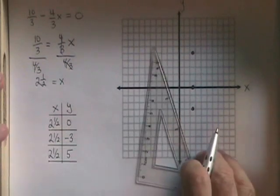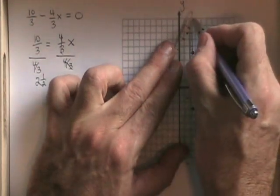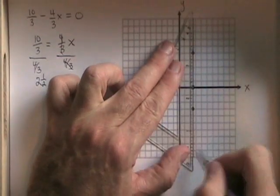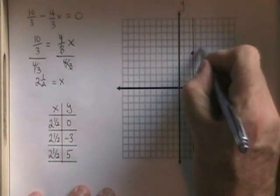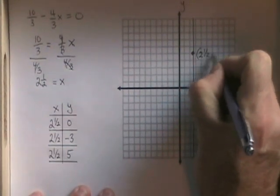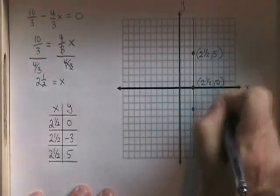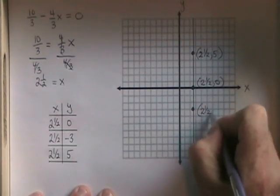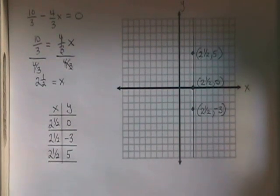All that's left is to draw a straight line through those points, going all the way through the graph, and to label the three points that were in my table. This is how we graph a vertical line.